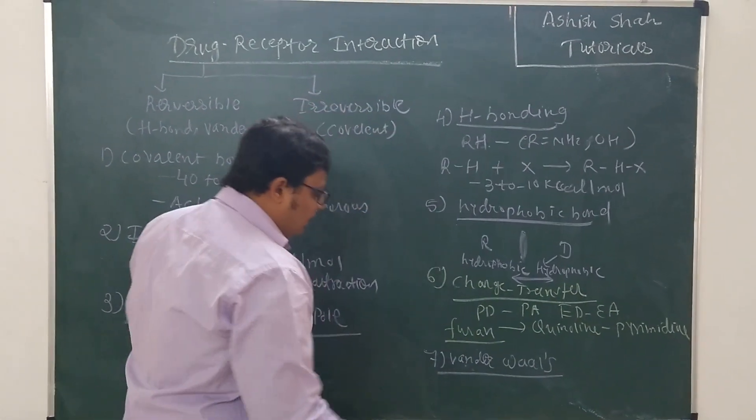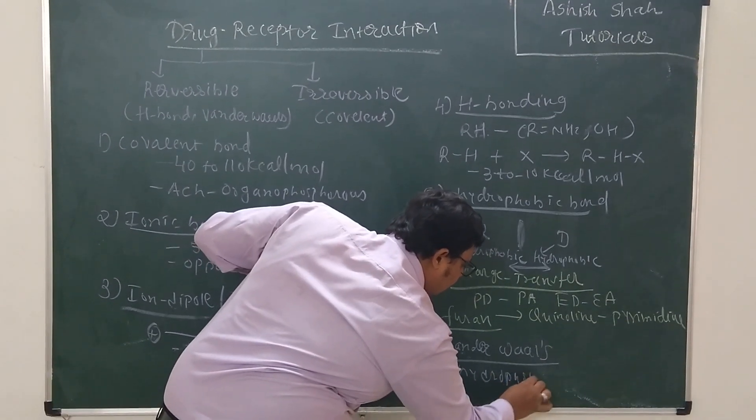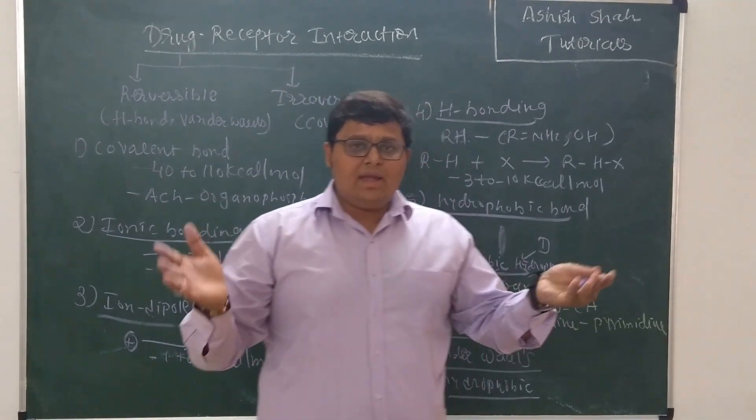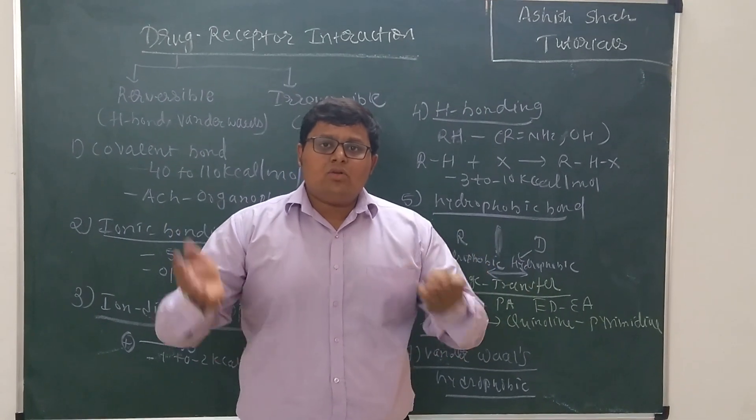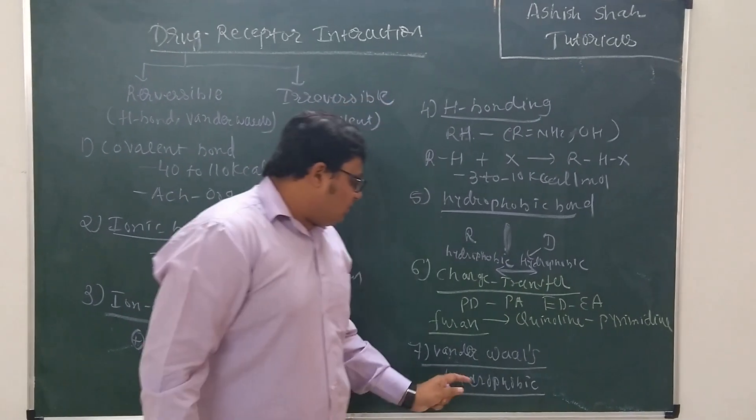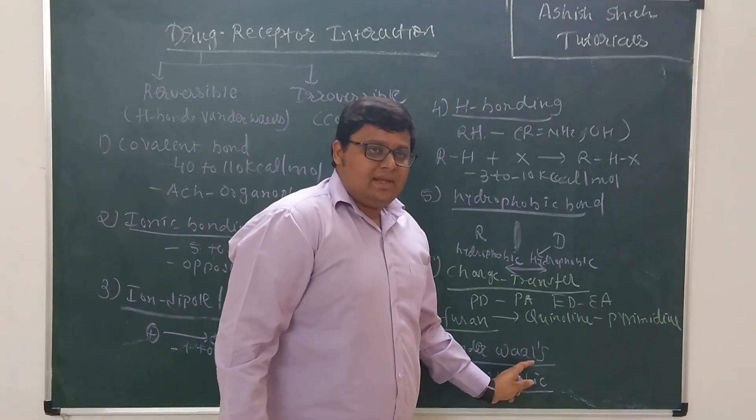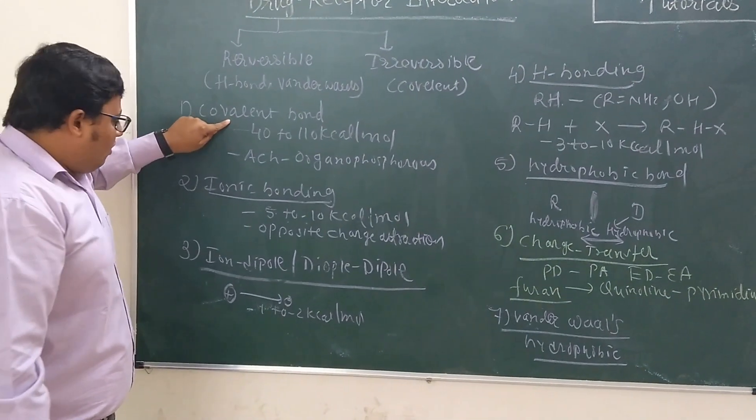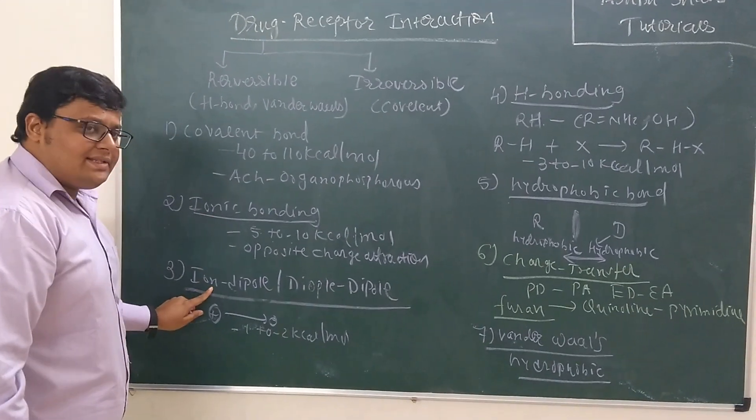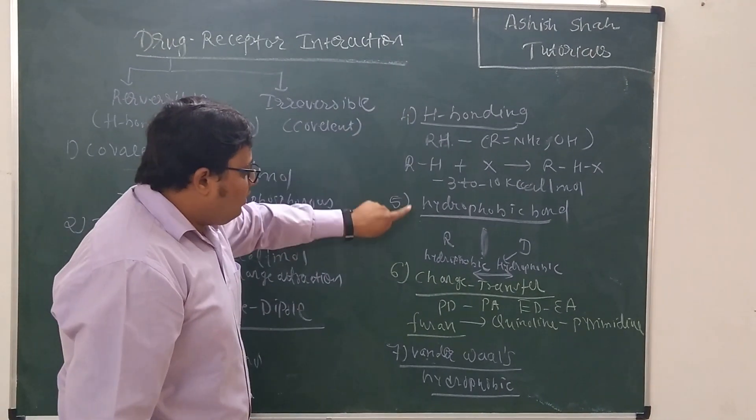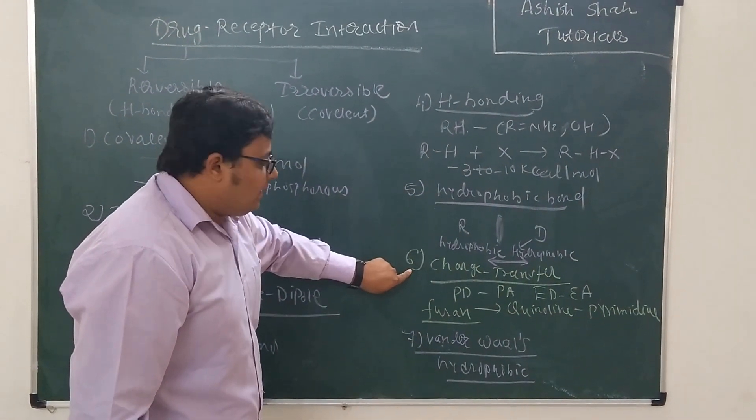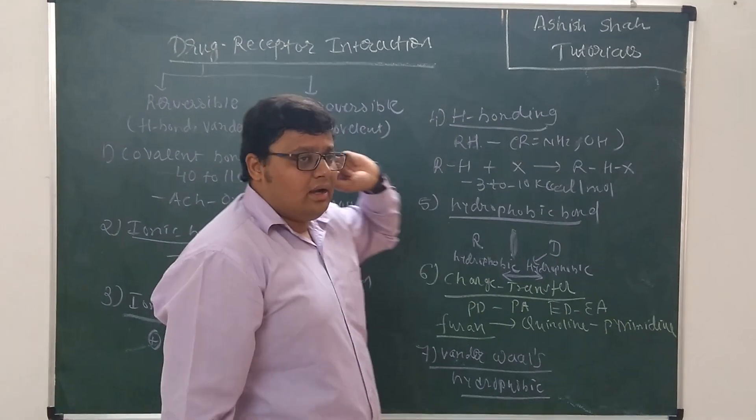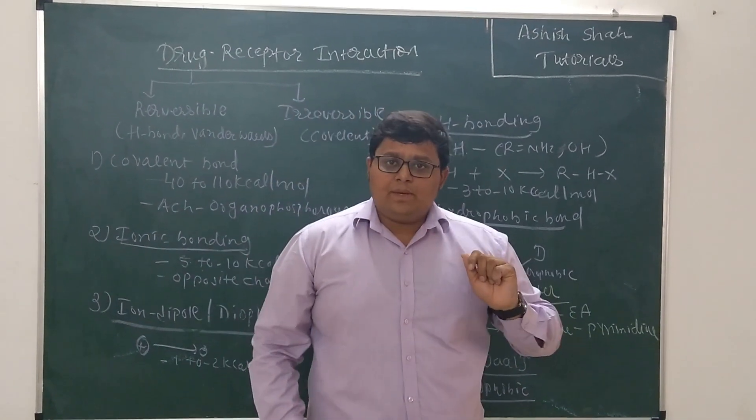Seventh one type is Van der Waals bonding. So Van der Waals bonding can be referred as weak interactions between hydrophobic molecules. Water bridge bonding can also occur when there is a cavity between drug and receptor and there are water molecules that may be included in non-covalent interaction which is known as Van der Waals bonding. So in conclusion, when drug will bind with receptor it can have seven types of interaction: first one is covalent bonding, second one is ionic bonding, third one is ion-dipole and dipole-dipole interaction, fourth is hydrogen bonding, fifth one is hydrophobic bonding, sixth is charge transfer and seventh one is Van der Waals force.